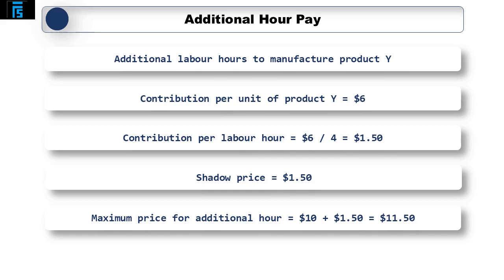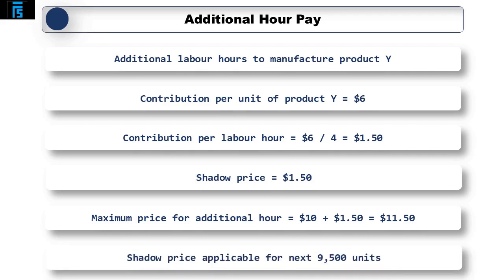Once the company has met the demand of Y, labour would no longer be a limiting factor. Therefore, once they have made an additional 9,500 units of Y, the shadow price will no longer be applicable. The shadow price would be applicable for the next 38,000 hours — calculated as 9,500 units of Y multiplied by 4 hours.